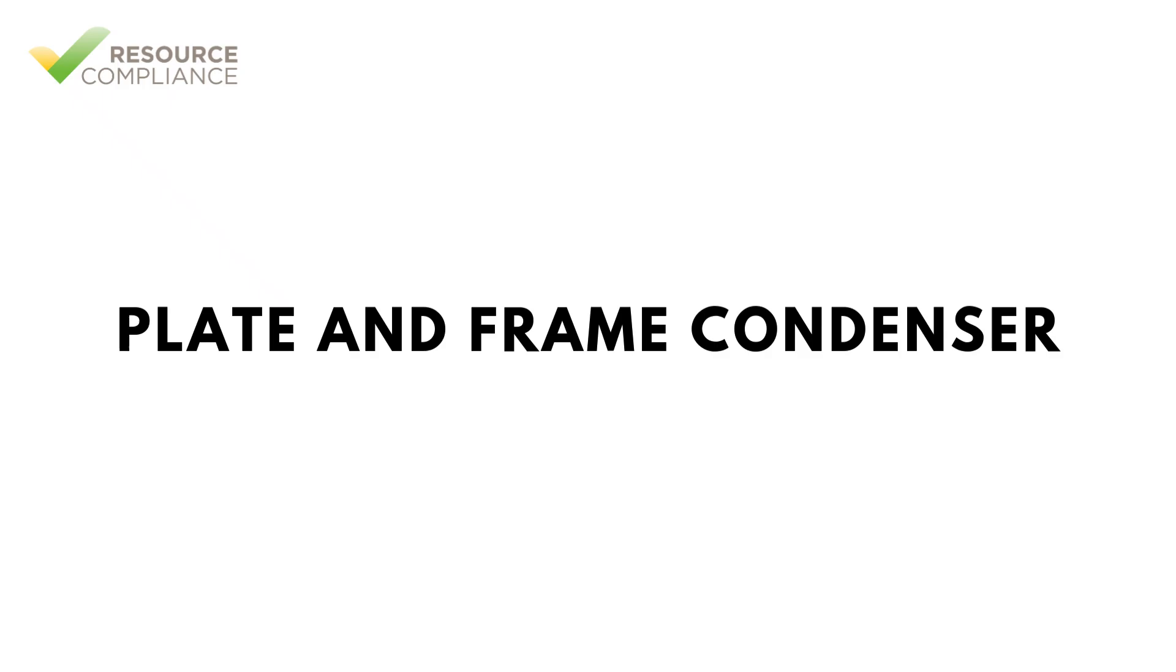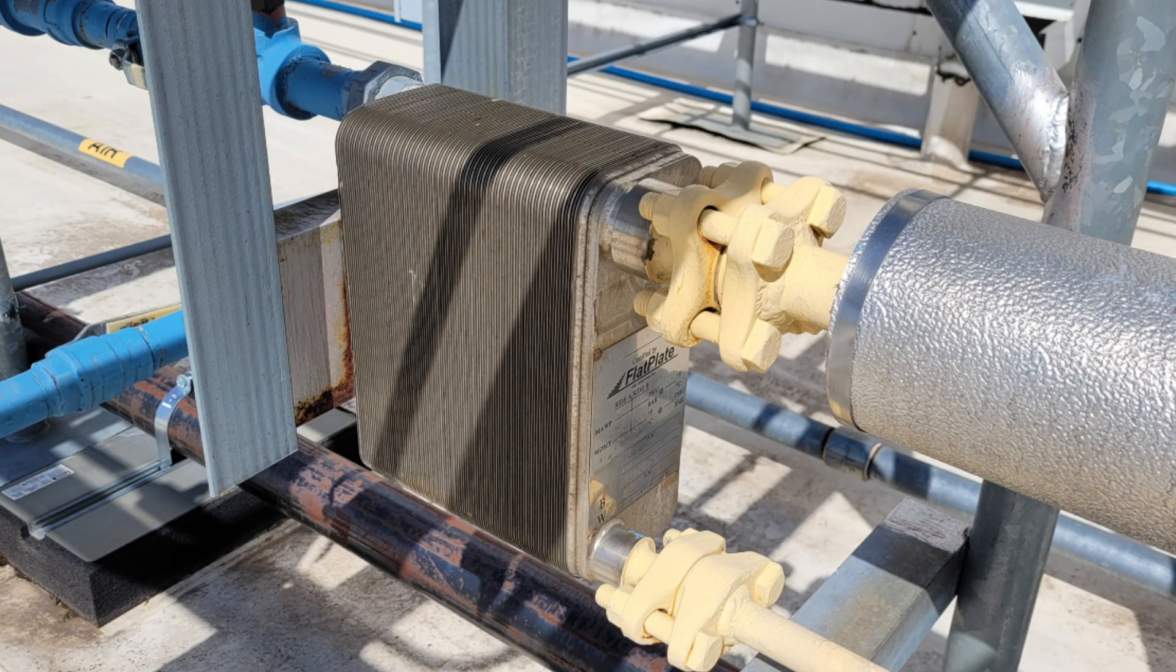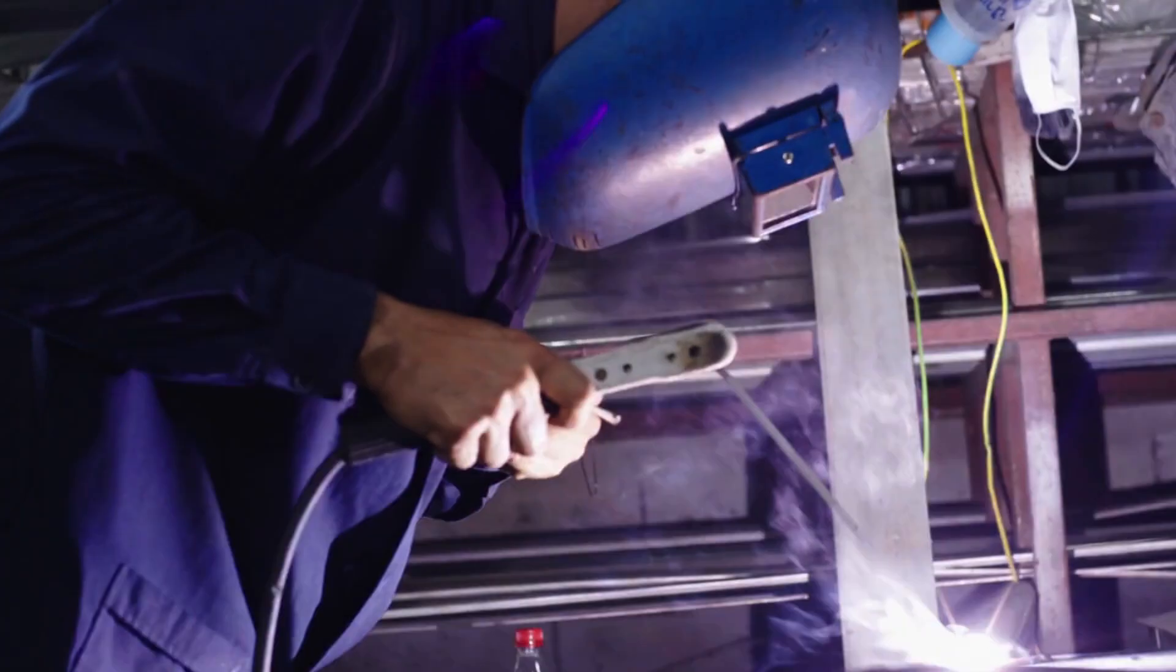A plate and frame condenser consists of a series of thin corrugated metal plates, typically made of stainless steel. Each plate has a gasket that seals the plate edges to ensure the fluids do not mix. Small plate and frame heat condensers are often seal welded to negate the need of gaskets altogether.